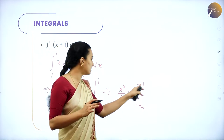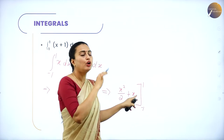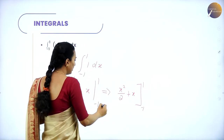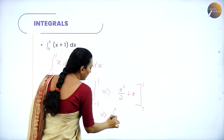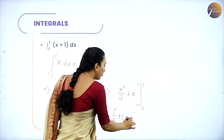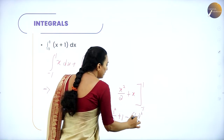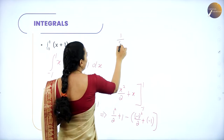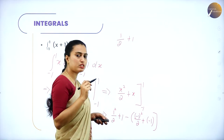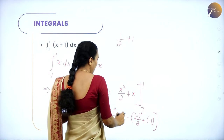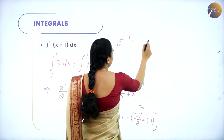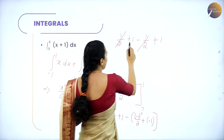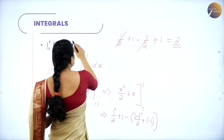Apply the upper limit first: (1²/2 + 1) minus, then open the bracket and apply the lower limit x = -1: ((-1)²/2 + (-1)). This gives (1/2 + 1) minus (1/2 - 1). The +1/2 and -1/2 cancel, leaving 1 + 1 = 2. So the answer is 2.